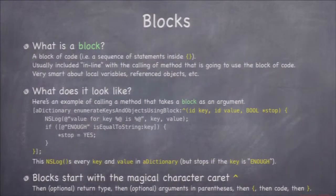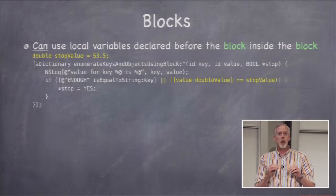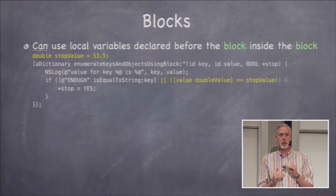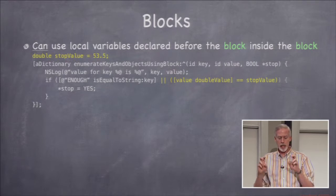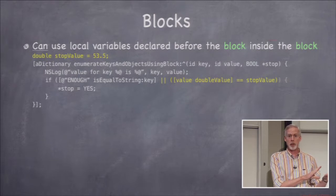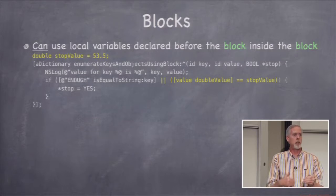Blocks in Objective-C always start with the caret character. Then there may be a return type, possibly some arguments in parentheses, and then a curly brace with code inside. The compiler knows how to have local variables declared before the block work inside the block — for example, a local variable like stopValue defined in the calling scope can be used inside the block. However, those captured variables are read-only by default inside the block.